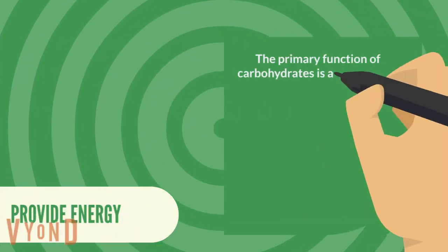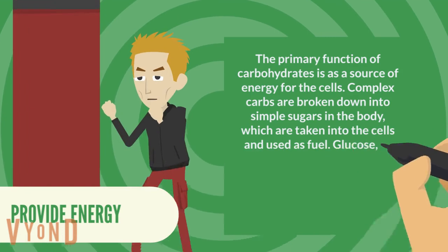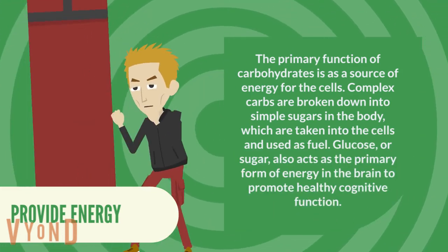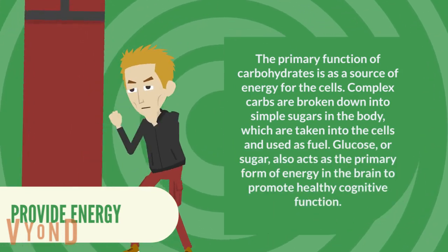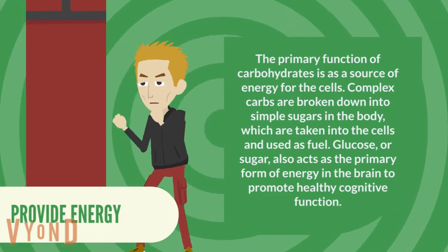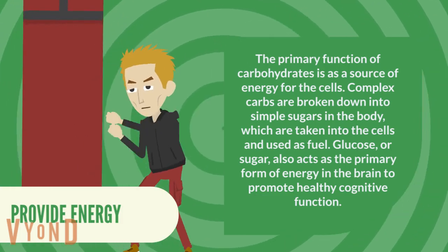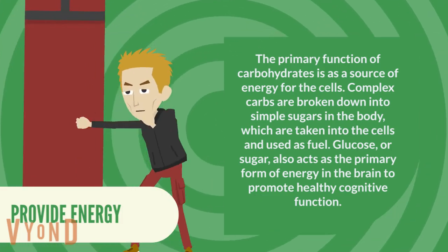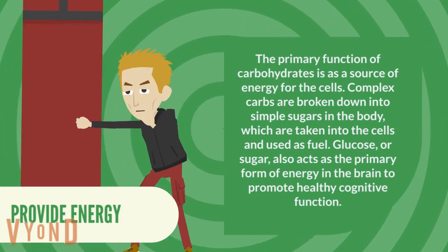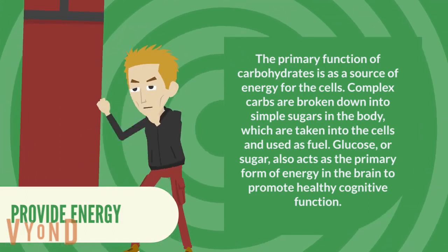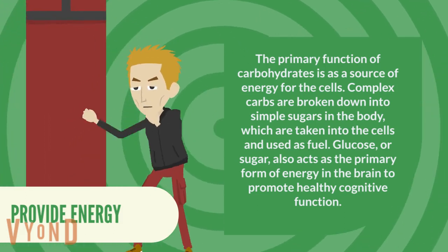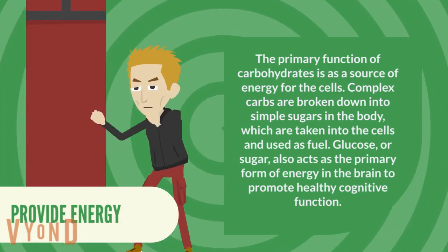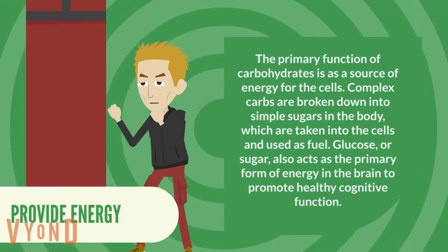Third, provide energy. The primary function of carbohydrates is as a source of energy for the cells. Complex carbs are broken down into simple sugars in the body, which are taken into the cells and used as fuel. Glucose, or sugar, also acts as the primary form of energy in the brain to promote healthy cognitive function.